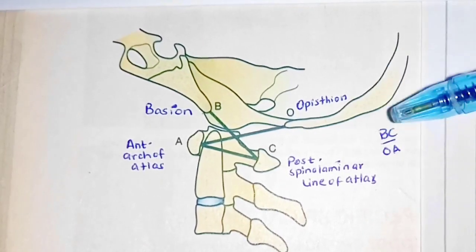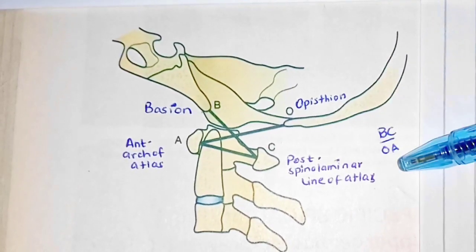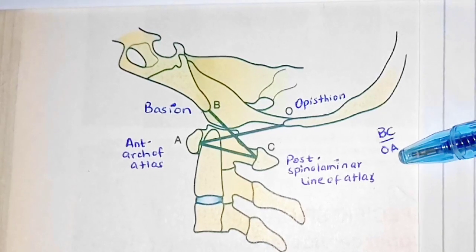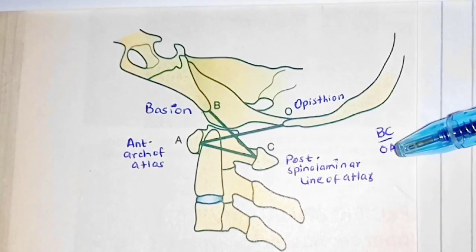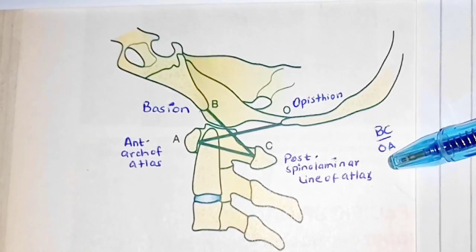These values are considered normal on the plane radiograph if the BC over OA ratio is less than 1 while these are considered normal on the CT when this ratio is less than 0.9.